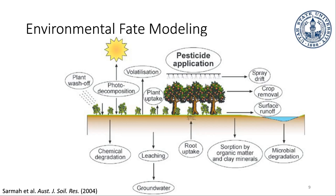If you look at this diagram, we've got the pesticide application, which can occur in a couple of different ways. Sometimes pesticides are sprayed from planes; I did a little bit of field work where I just used a backpack sprayer. Sometimes there are vehicles that just drive around and spray them out of the sides. Once that pesticide is applied, some of it may not even reach the plant — that's known as spray drift.